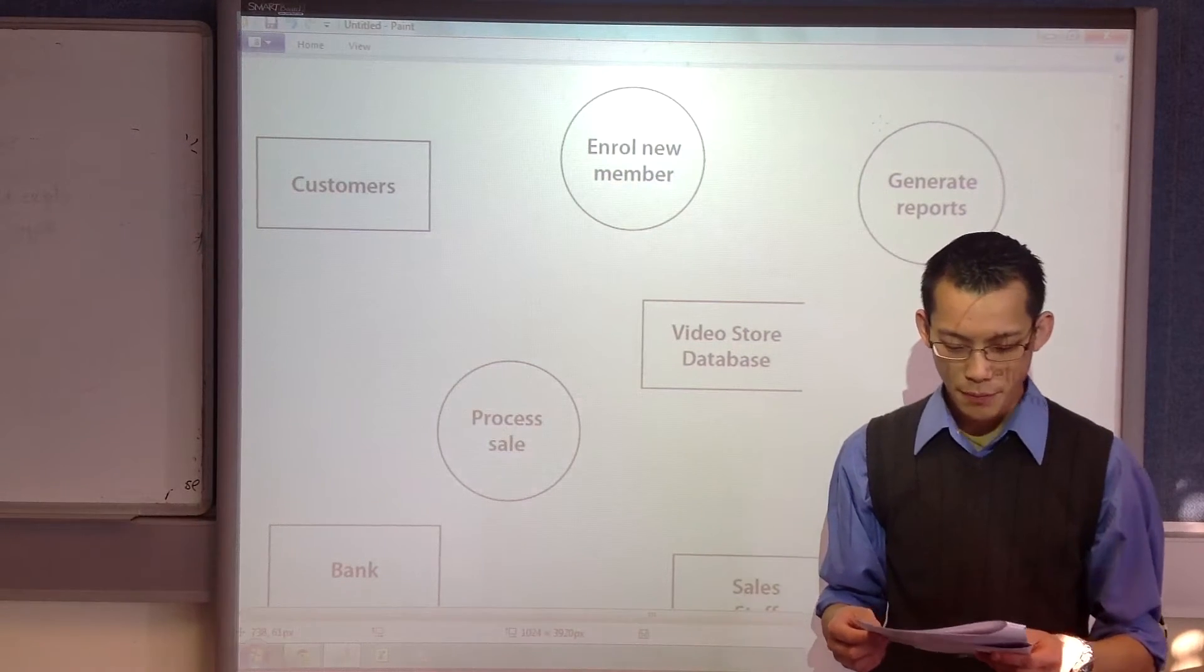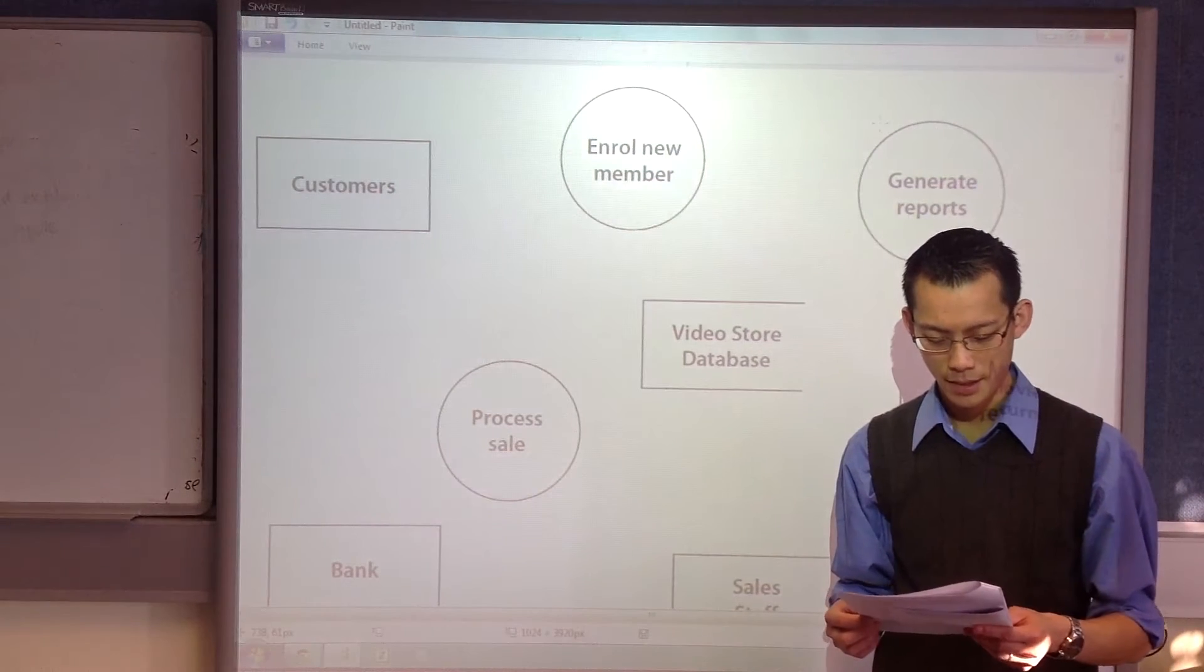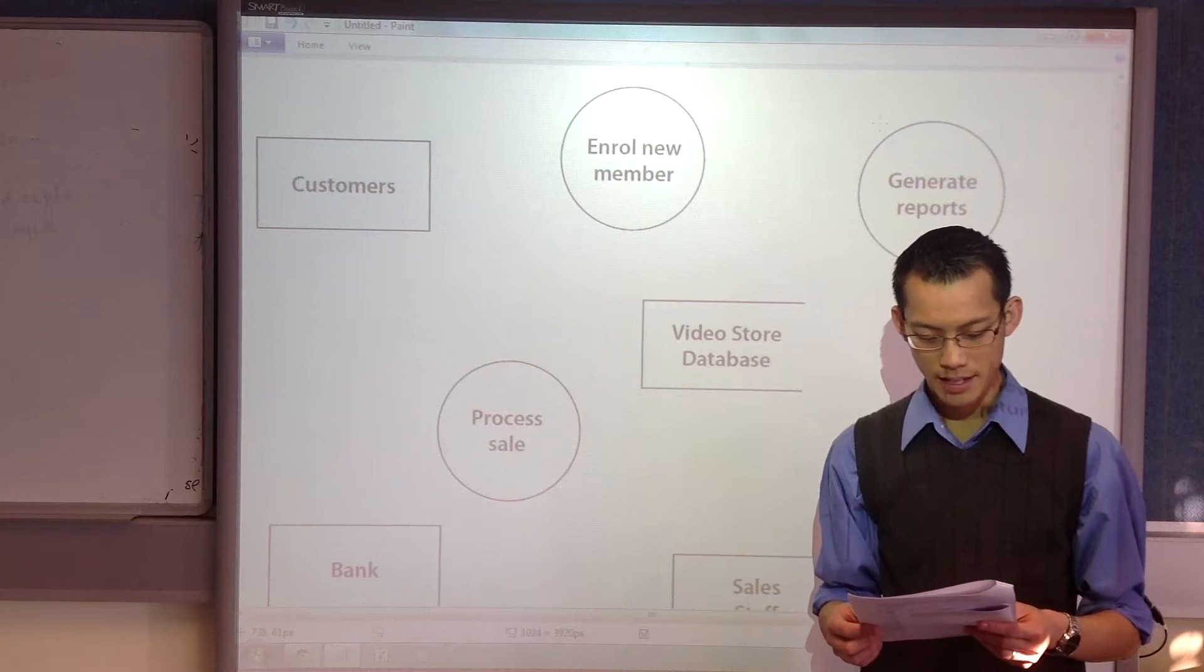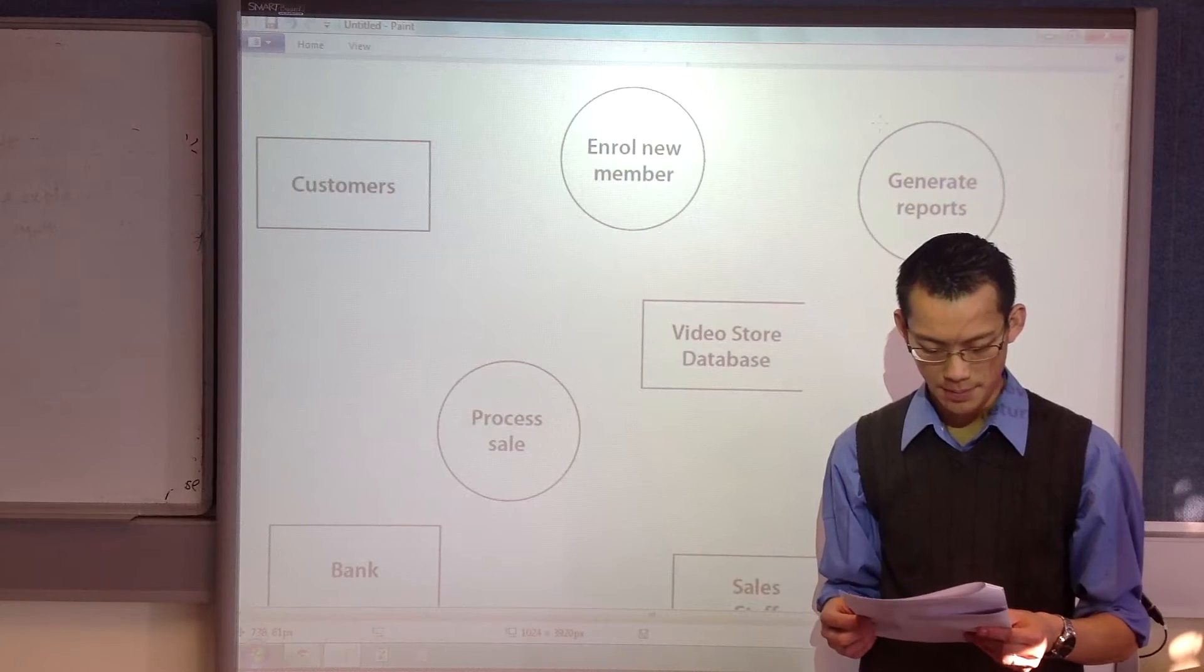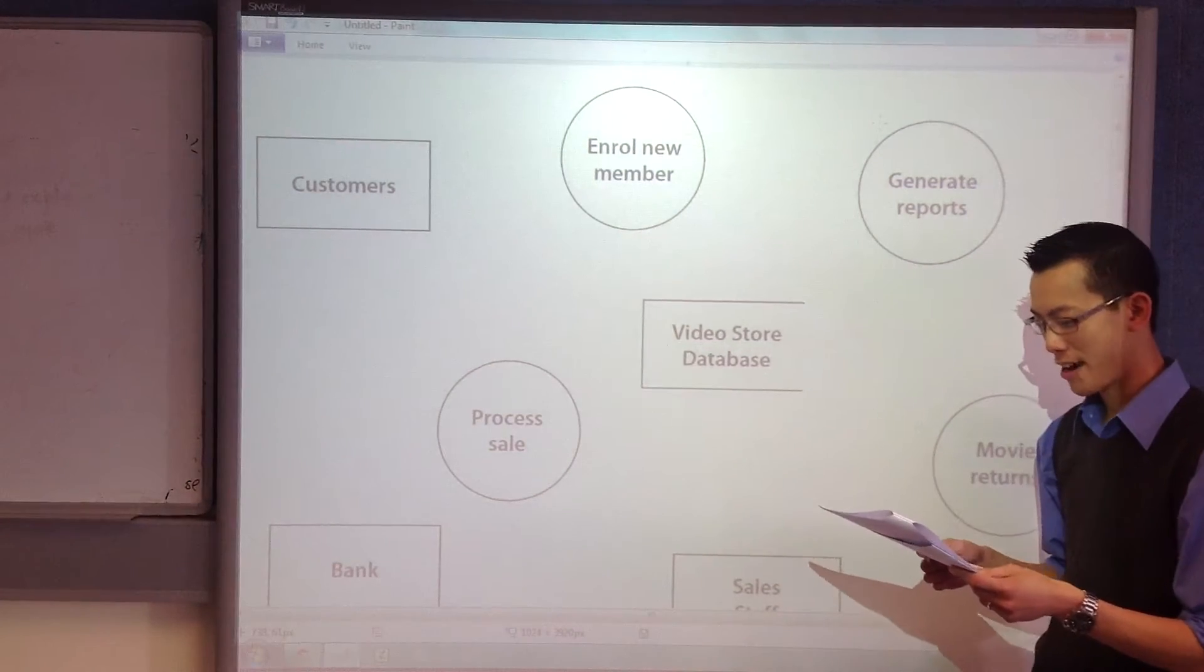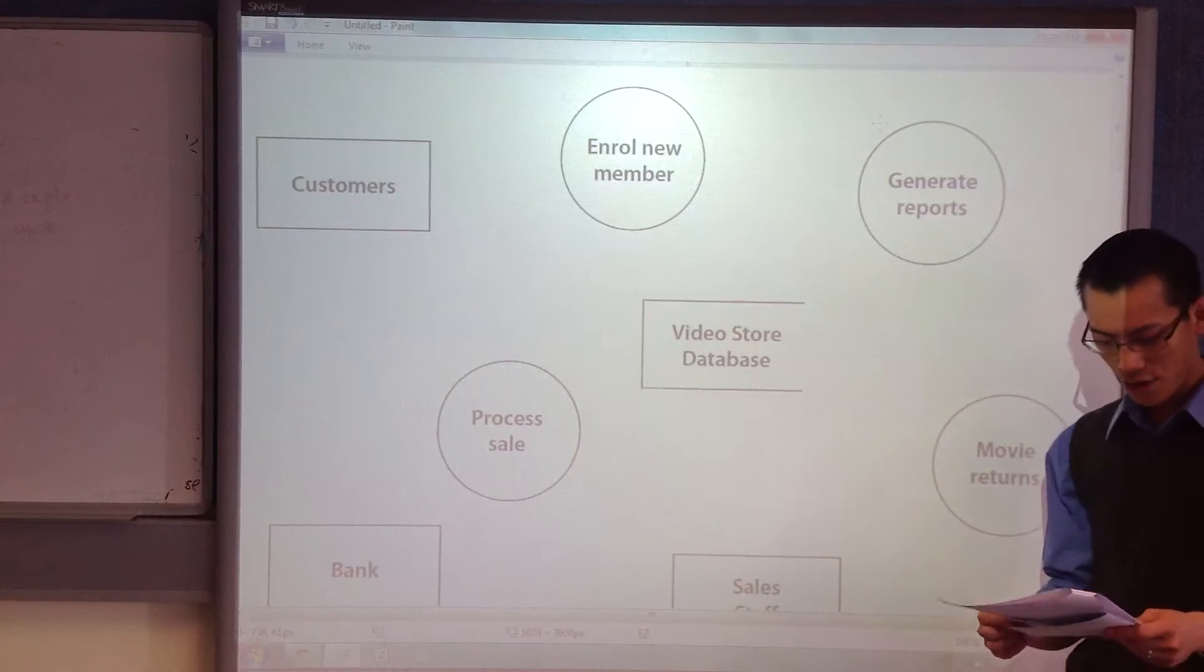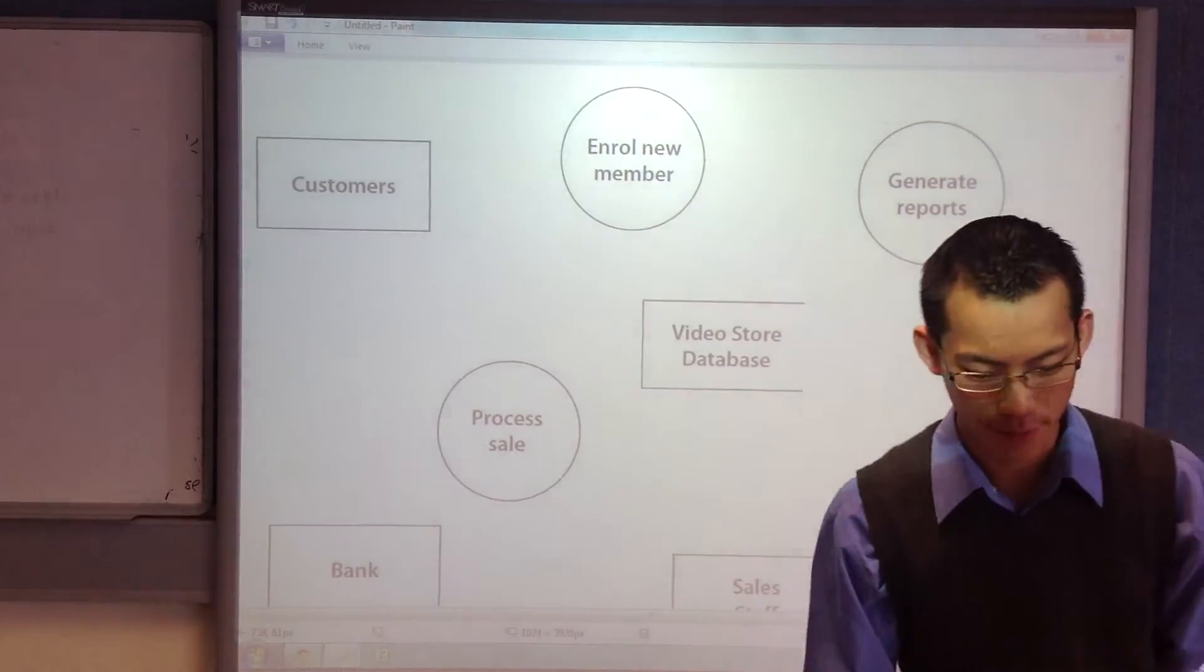The customers are provided with a membership card that includes a barcode representing the membership number. Similarly, each video and DVD has a sticker with a unique barcode, and a separate EFTPOS machine is used to process all non-cash payments. The following incomplete data flow diagram is an attempt to describe the information system.